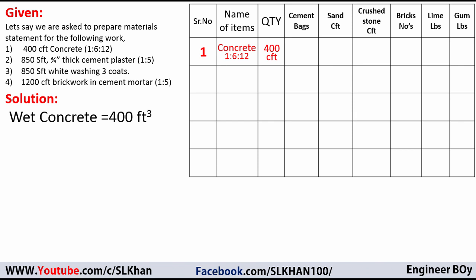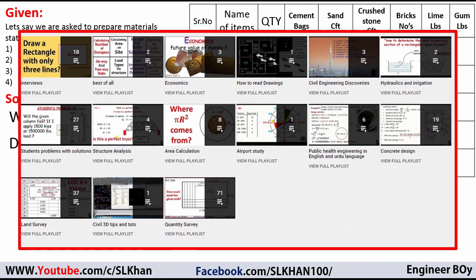The wet concrete is 400 cubic feet. We're going to convert this into dry by multiplying the wet concrete with a factor of 1.54, to convert the wet volume into dry volume. If you want to know this in detail, I have already uploaded a separate video on PCC analysis — you can watch that in the playlist for quantity survey.